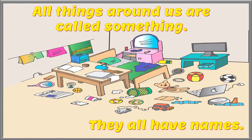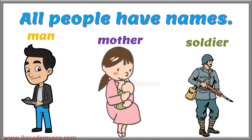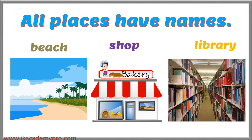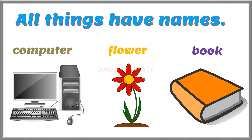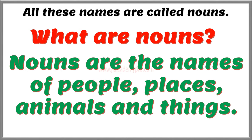All things around us are called something — they all have names. All people have names: man, mother, soldier. All places have names: street, shop, library. All animals have names: fox, butterfly, elephant. All things have names: computer, flower, book. All these names are called nouns.